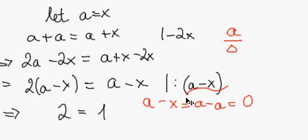And then we divide by a minus x. And as you see here, I've written it down already. It is division by 0, which is not allowed. And then we would get 2 equals 1. But division by 0 is not allowed.